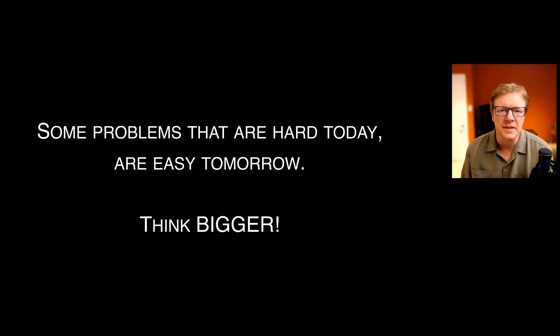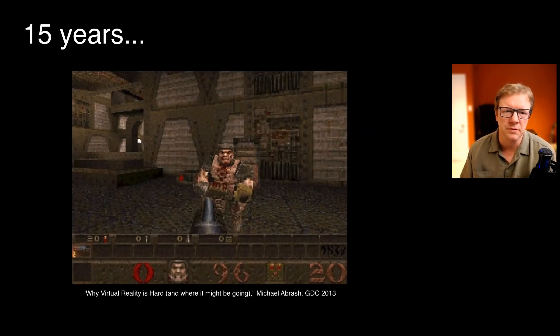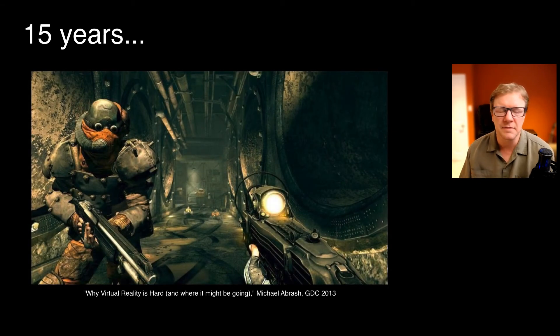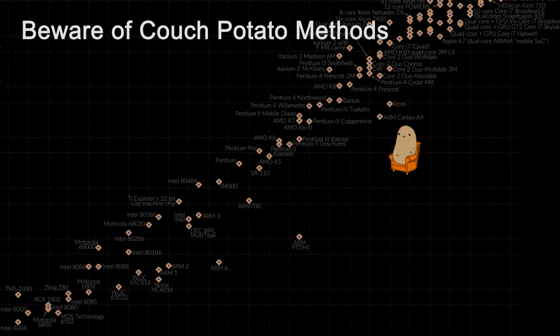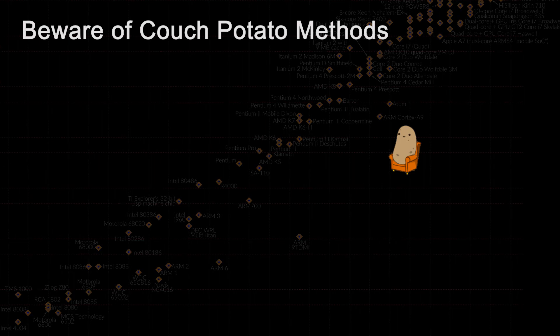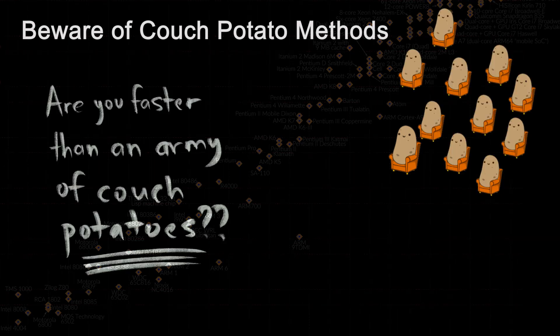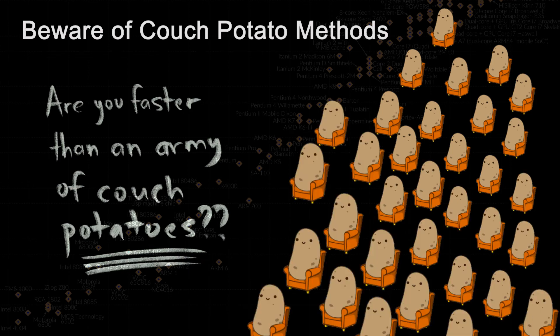I want to end by talking about how to pick problems. Keep in mind that things change fast, so you always want to think bigger. 15 years went from that to that. And even methods which are slow now will ultimately become fast. So you could literally sit on the couch and just wait, and things will get faster. So are you faster than an army of couch potatoes? Because they're ultimately going to come for you. They're going to get faster and faster, even if you don't do anything.